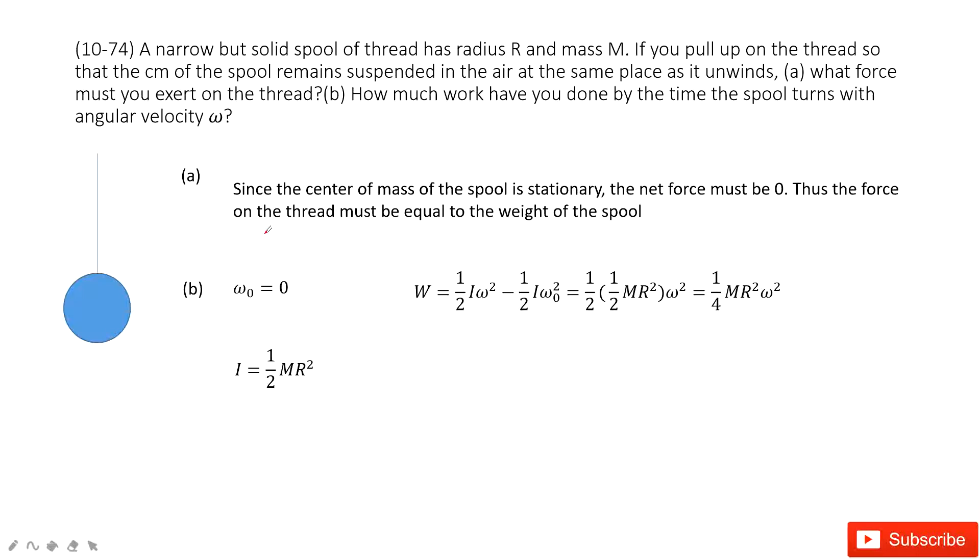In this chapter, we talk about rotational motion. In this system, you can see we have one string connected with the object. The object's mass and radius are given.